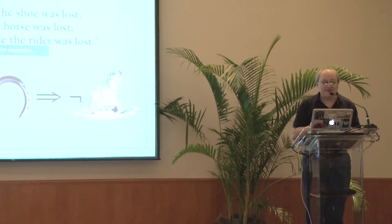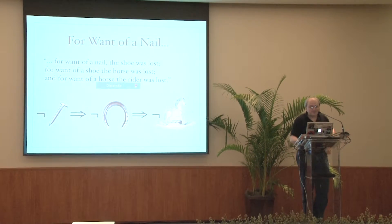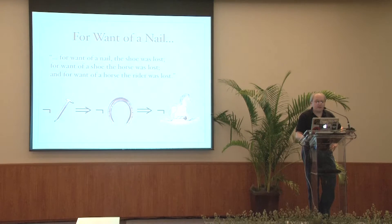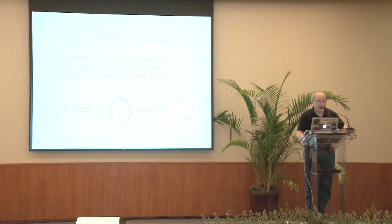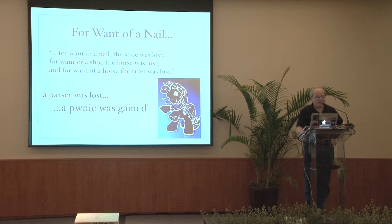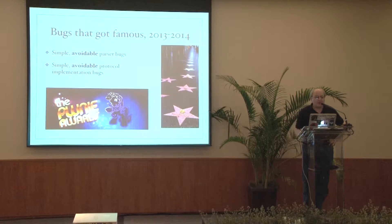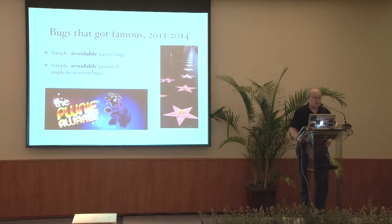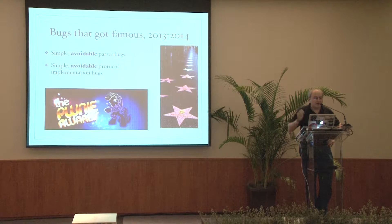A small thing that propagates cascadingly and creates enormous failure in the end. You can write it down formally: no nail, no horseshoe, no horse. Very often, when a simple mistake is made, something is gained — and that thing is usually a pony when we're talking about bugs. That's how bugs get famous. We're going to talk about those famous bugs in 2013 and 2014. They were all simple and avoidable — exactly the case when you should have shoed your horse right.